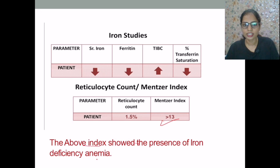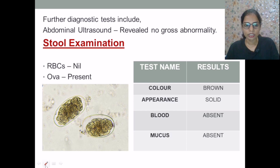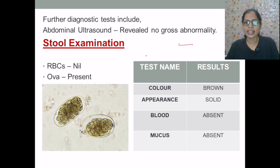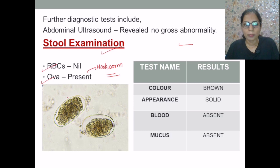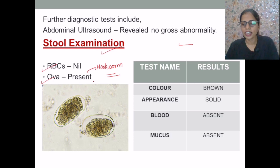The above index confirmed the presence of iron deficiency anemia. Further diagnostic tests include abdominal ultrasound, which revealed no gross abnormality. Stool examination was also performed: no occult RBCs were present, but ova were present. Ova indicates hookworm — specifically Ancylostoma duodenale — confirming infection. This confirms that this is a case of iron deficiency anemia where the cause can be attributed to worm infestation.